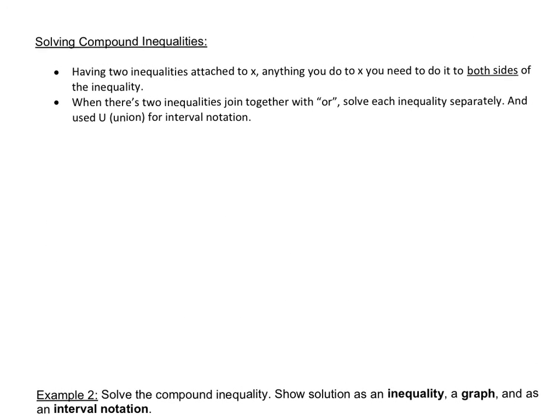Let's go back to the definition for a moment and understand how to solve compound inequalities. One thing for sure is that having two inequalities attached to x, anything you do to x, you need to do to both sides of the inequality. But when you have an or symbol that joins the two inequalities together, you'll solve them separately, and then you'll use U for union when you join the two intervals together, which I'll explain through these examples.